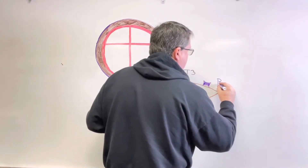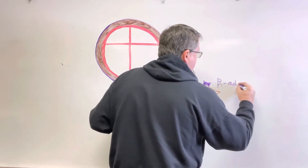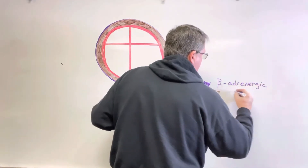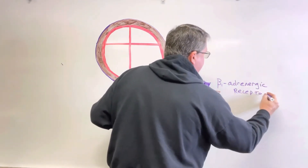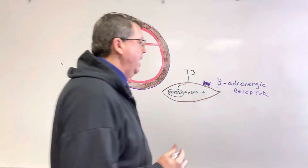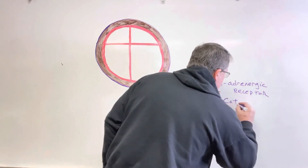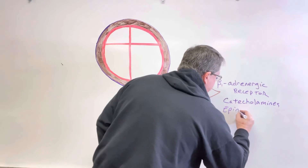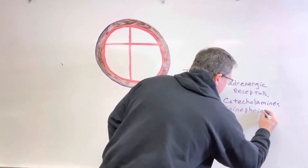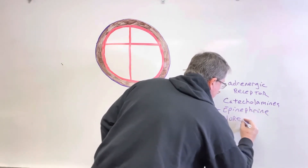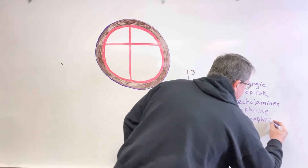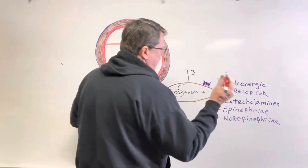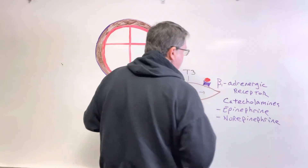So we're going to end up with a B1 beta adrenergic receptor. Now what do beta adrenergic receptors do? They're going to bind something called catecholamines. Catecholamines are going to be things such as epinephrine and norepinephrine. So let's say this is my catecholamine right here — epinephrine and norepinephrine — and that's going to bind onto there.